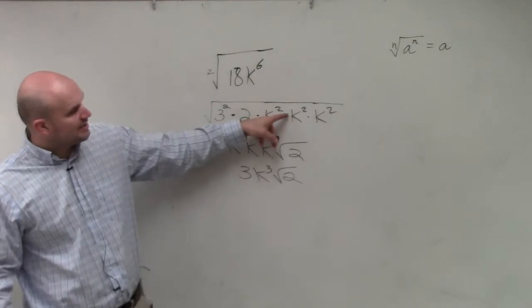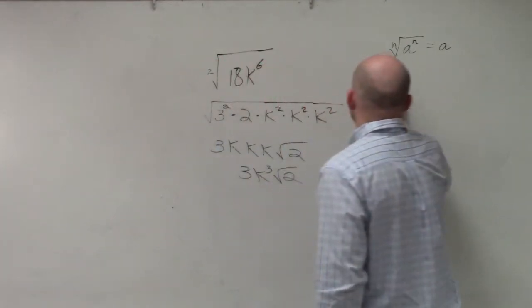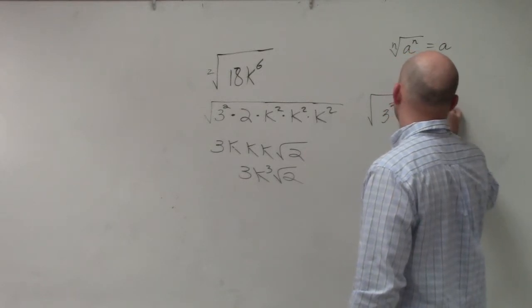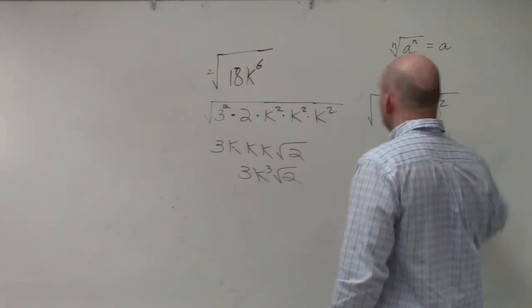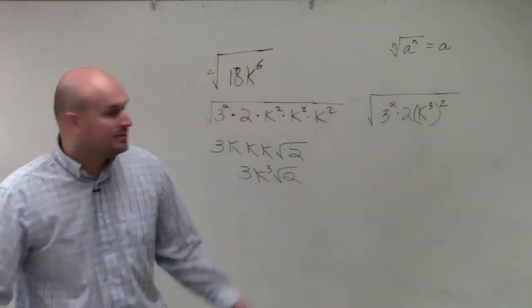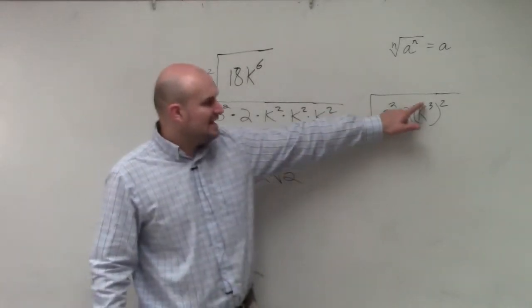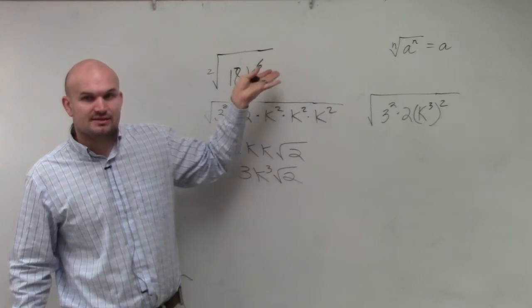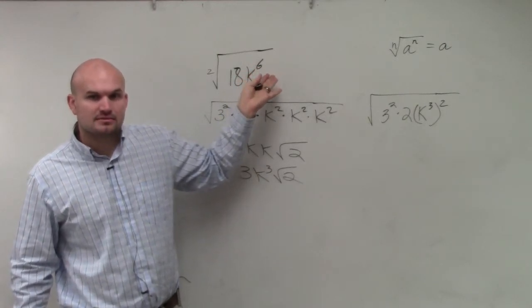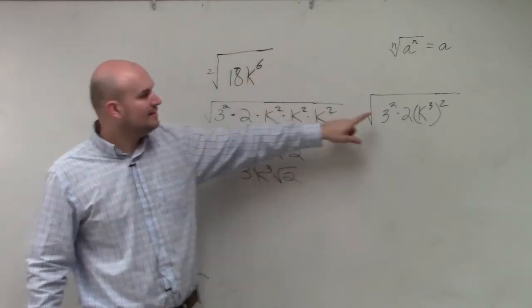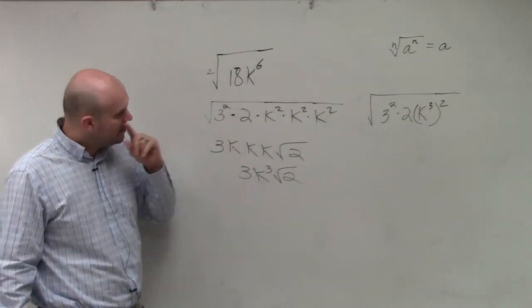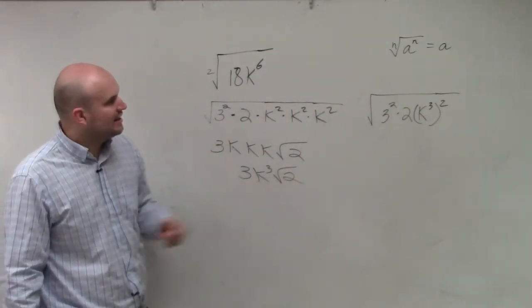You could also, instead of using the product rule, I prefer to rewrite it like this, which we'd call using the power rule. Because would you guys agree that k cubed squared is the same thing as k to the sixth? That way you can write it much quicker using that method, rather than going through there. But this still works. That would be your finalized answer.